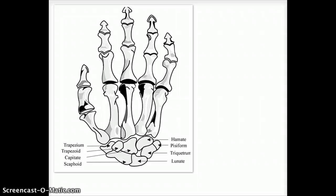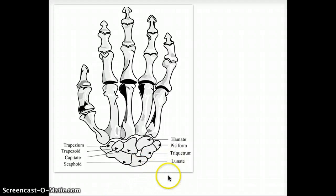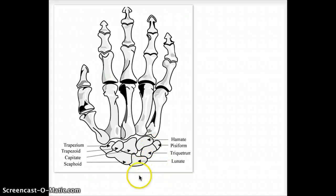Next is lunate. Lunate is the bone that is most commonly displaced, and sometimes it is displaced onto the carpal tunnel, causing a median nerve problem. That is the clinical significance of lunate.